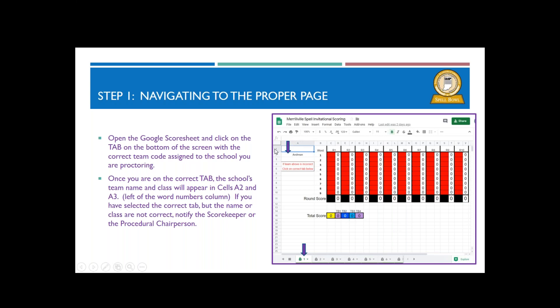Once you're on the correct tab, the school's team name and class will appear up here in cells A1 and A2. The team name should be right here. If you selected the correct tab, the tab that you've been given, but the name or the class are not correct, they might tell you class one, class two, class three, class four, then you need to notify the scorekeeper or the procedural chairperson so that they can get you to the right screen for you to enter your scores.